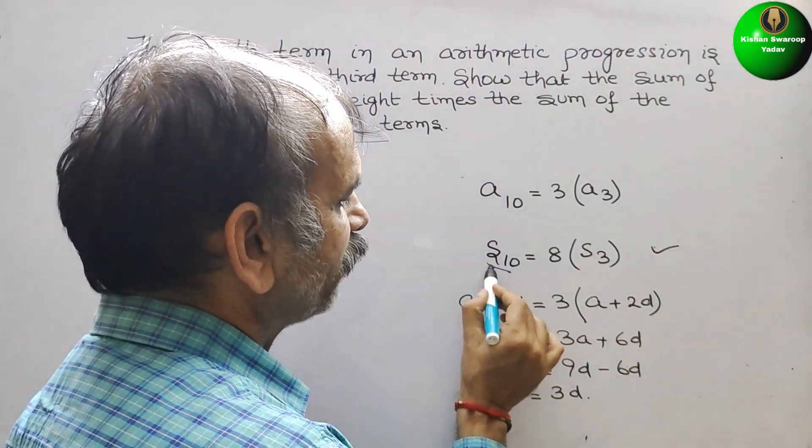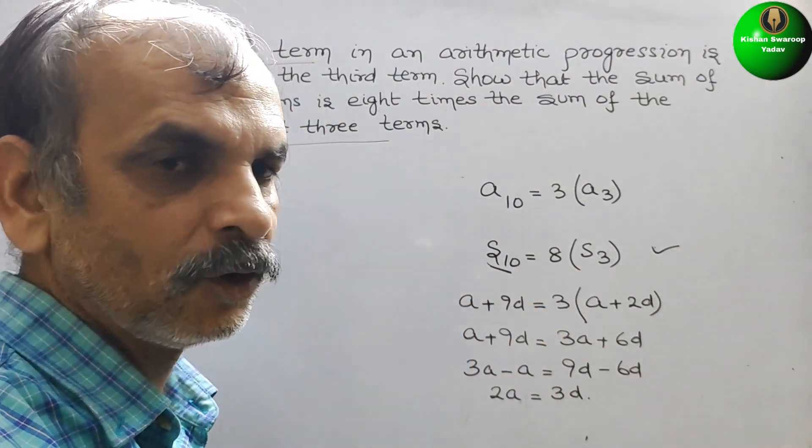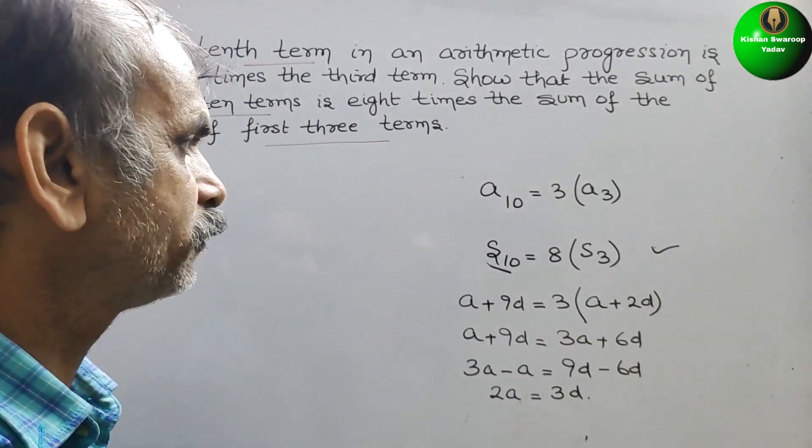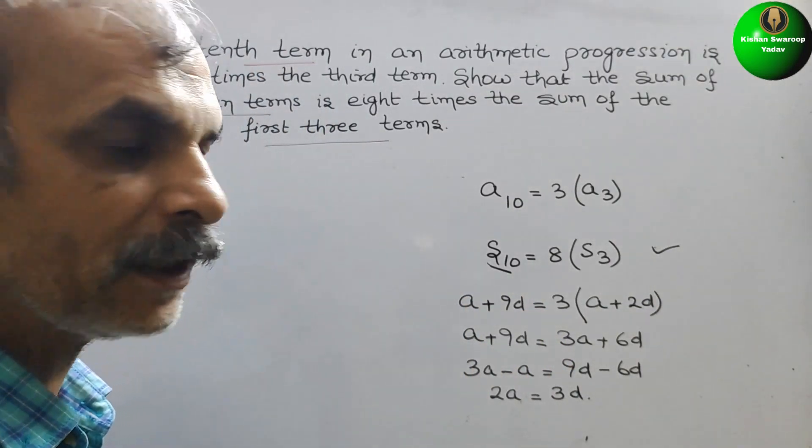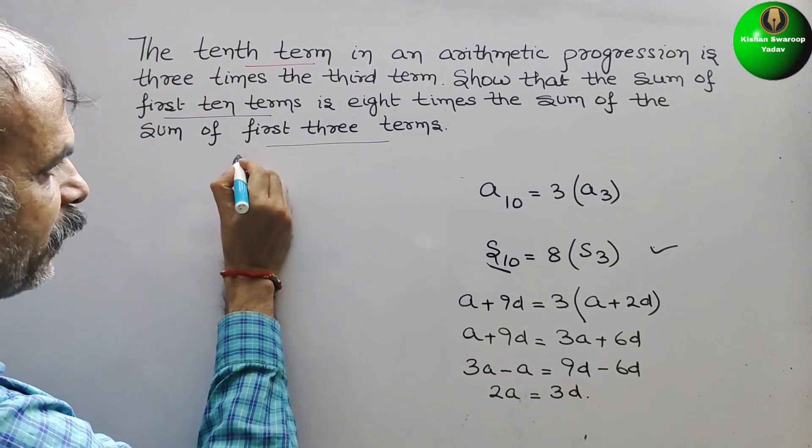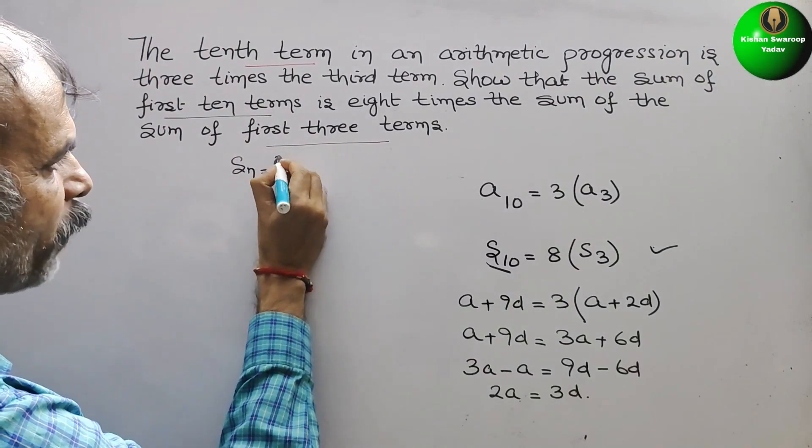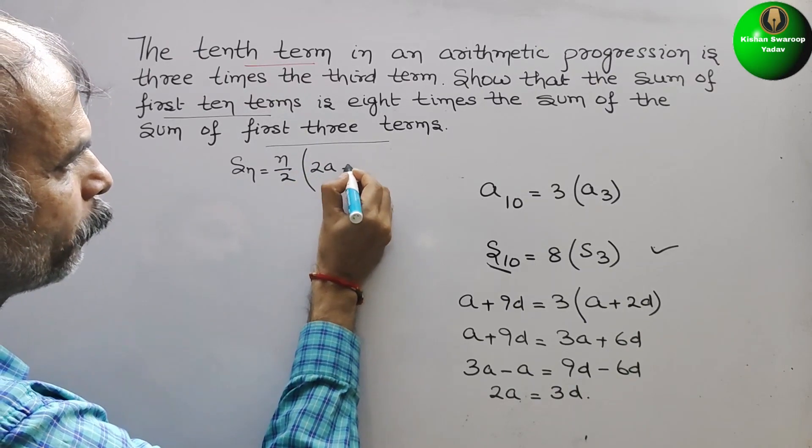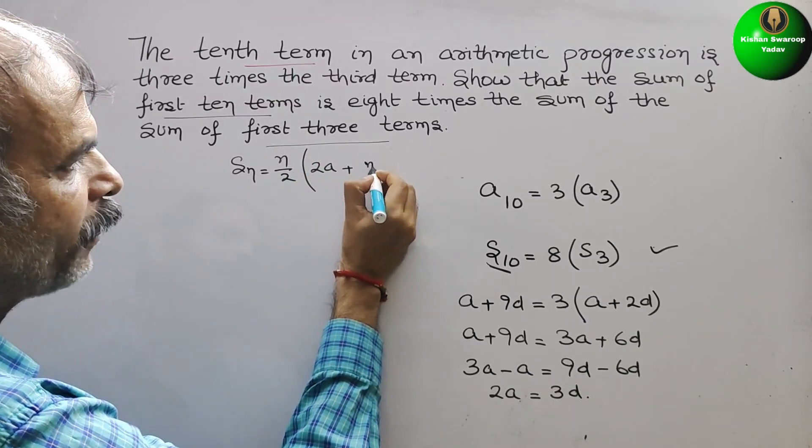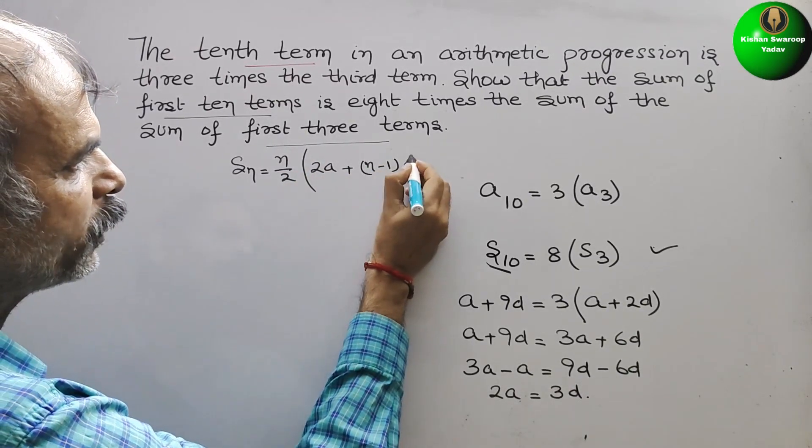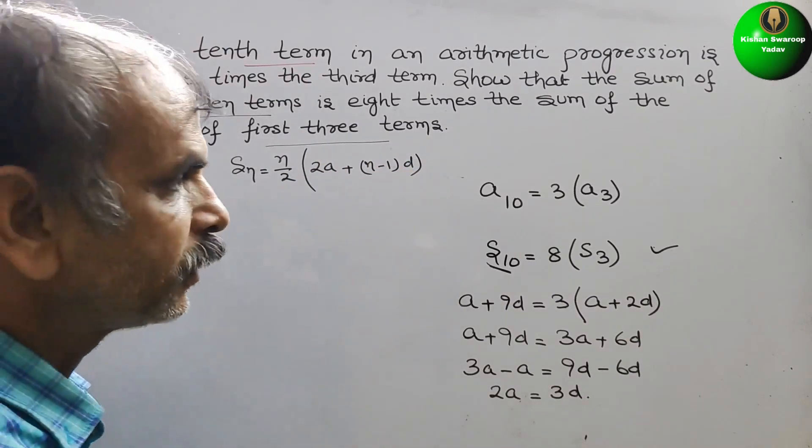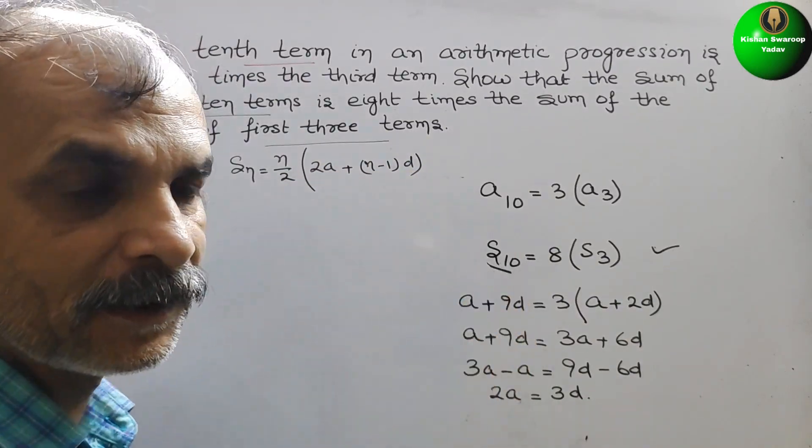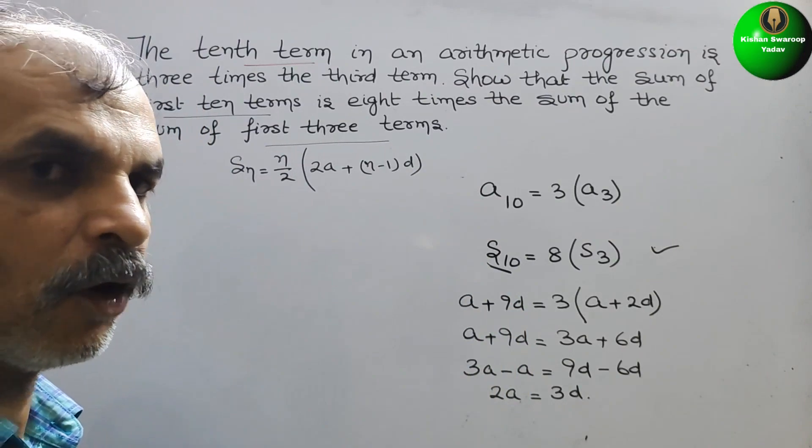Next, here comes S10. So first we will write the sum formula. What is that? Sn is equal to n by 2, here comes 2A plus n minus 1 into D. Now put the value 10 here in place of n. What we will get?